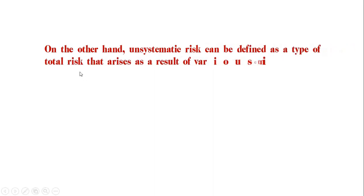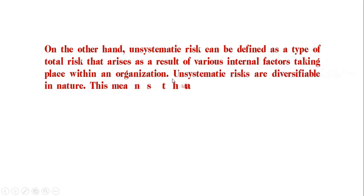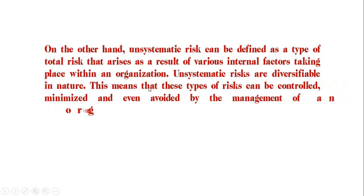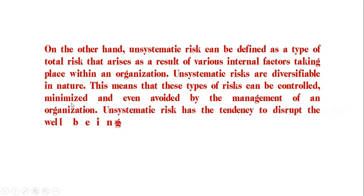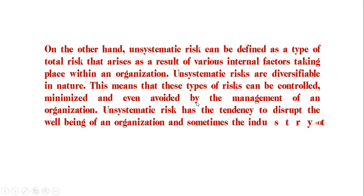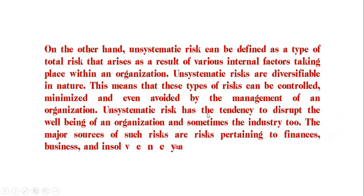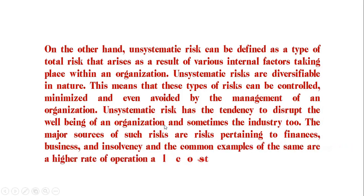On the other hand, unsystematic risk can be defined as a type of total risk that arises as a result of various internal factors taking place within an organization. Unsystematic risks are diversifiable in nature, meaning these types of risk can be controlled, minimized, and even avoided by the management of an organization. Unsystematic risk has the tendency to disrupt the well-being of an organization and sometimes the industry too.